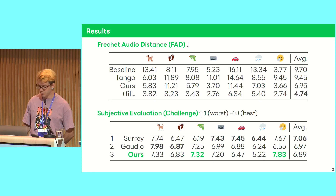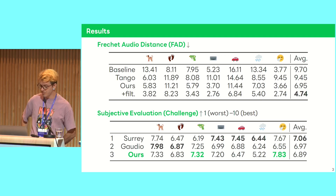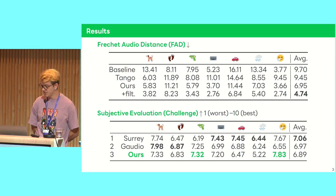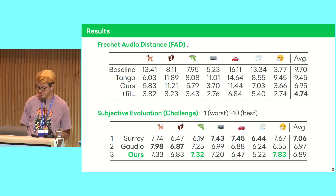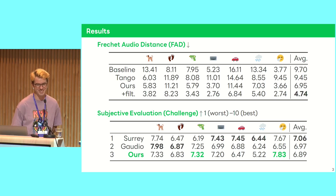Here are our results. Using the Tango text-to-audio model directly with prompts already gives a little better than the baseline. By doing fine-tuning with class embeddings, we can notably decrease the FAD, and then post-filtering decreases it by another third. In the challenge results, we got third place, which we're quite happy about. In the subjective evaluation, results were quite split between teams for different categories, and we were best for gunshot and sneeze sounds. I hope we can discuss more at the poster. Thank you.